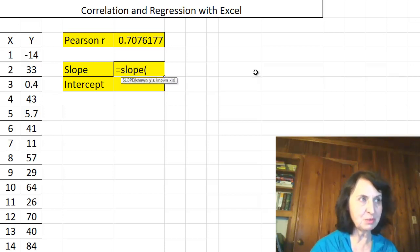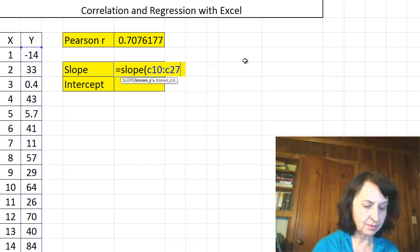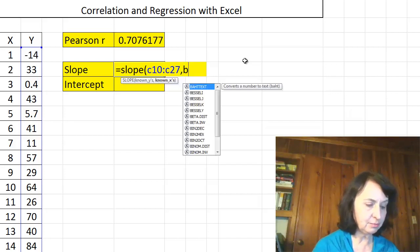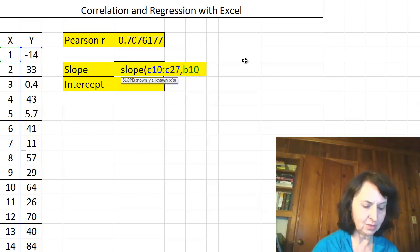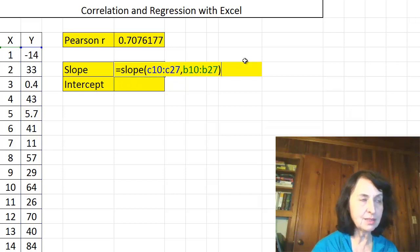And the formula for slope is slope. And then my data for slope is recorded first started with Y, C10 to C27, comma, and X values are in B10, not comma, colon, B27. Close the parentheses. And this is the slope.